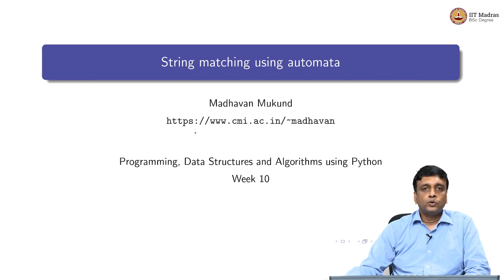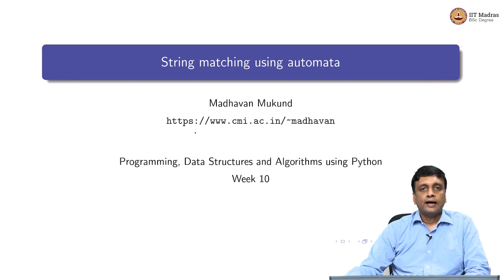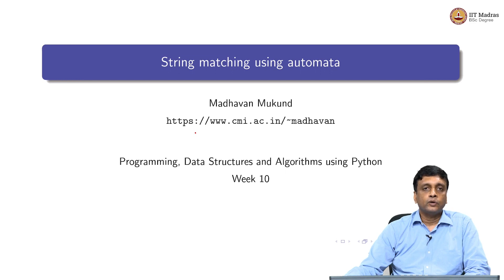Till now we have seen two different algorithms beyond the brute force which work on strings. We saw the Boyer-Moore algorithm, which uses the brute force idea with some heuristics for taking care of mismatches and skips over some letters. And then we saw the Rabin-Karp algorithm, which does a completely different thing — it converts the whole string into a number and then relies on numeric comparisons rather than string comparisons.